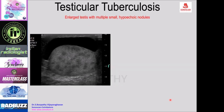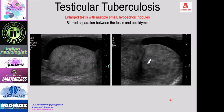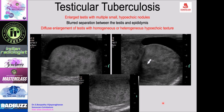A scrotal sinus is a very characteristic feature of tuberculosis. Testicular tuberculosis has varied appearances: an enlarged testis with multiple small hypoechoic nodules, hydrocele, or blurred separation between testis and epididymis in the region of the mediastinum testis — a very typical feature. The testis may be enlarged with homogeneous or heterogeneous hypoechoic texture, which should raise suspicion for tuberculosis.